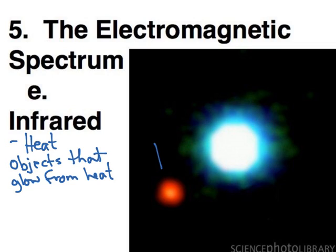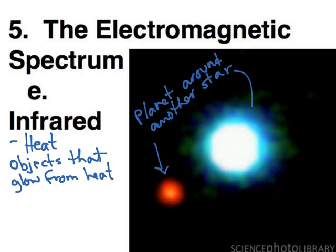Here we are seeing a planet around another star. It's too faint to see optically. This is the star. This is the planet. But in infrared, because planets are heated up by their stars, in this case this star is heating it up, we can see that planet in the infrared part of the spectrum.